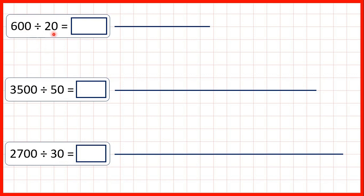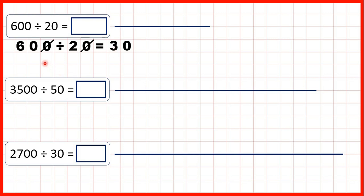First, we have 600 divided by 20. When we have division questions with end zeros, we can cancel the end zeros. So 600 divided by 20 gives us the same answer as 60 divided by 2. That's 30, because 6 divided by 2 is 3, and the remaining end zero in the dividend means we have an end zero in the quotient, so our answer is 30.